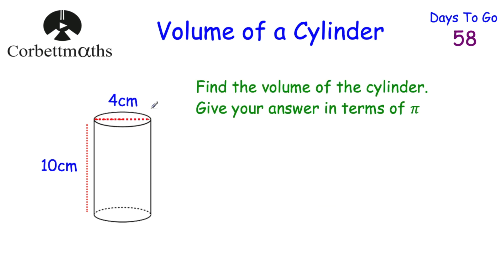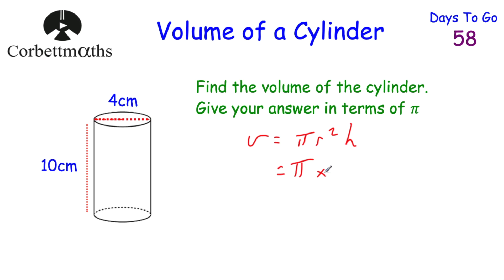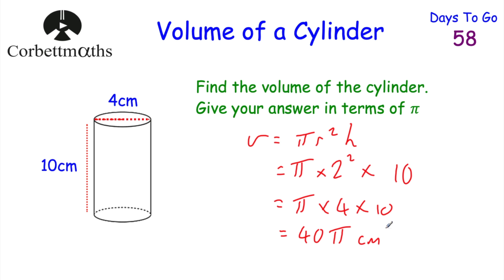Here's another cylinder question — this is a non-calculator question, so put your calculator down and give your answer in terms of pi. Volume = πr²h. The diameter of the circle is 4 centimetres, so the radius is 2 centimetres. We do π × 2² × 10. Remembering order of operations: 2 squared is 4, then 4 × 10 = 40, giving us 40π centimetres cubed.